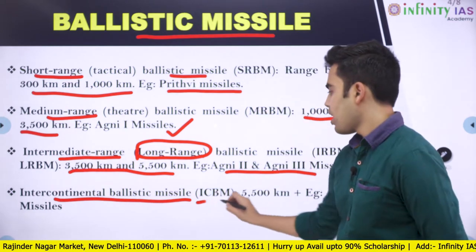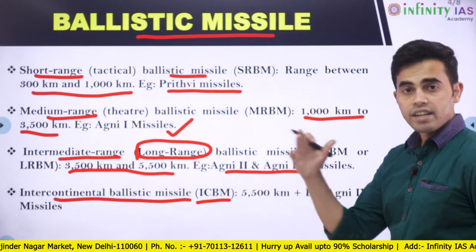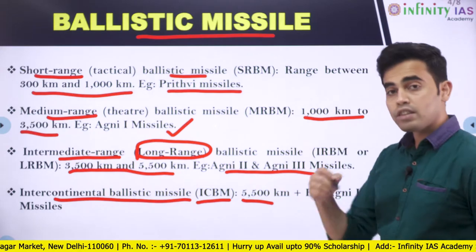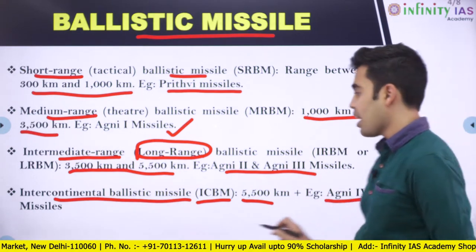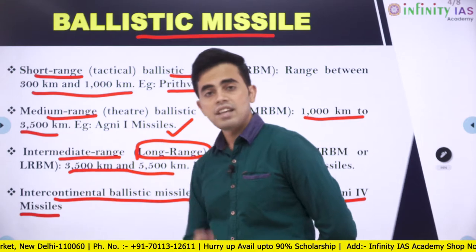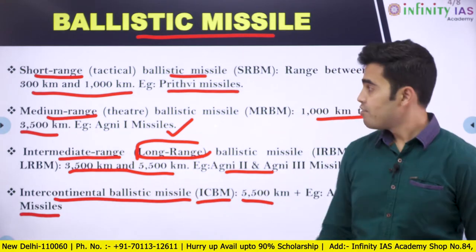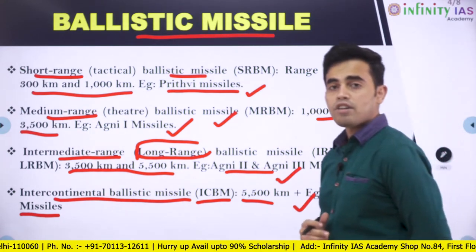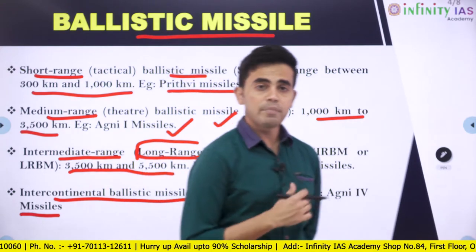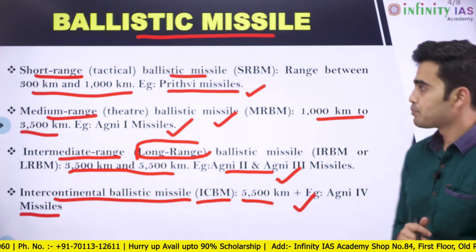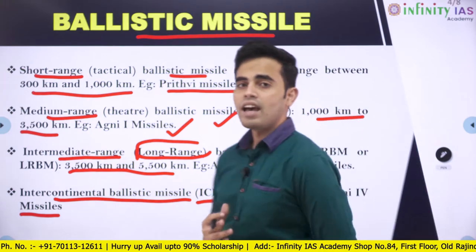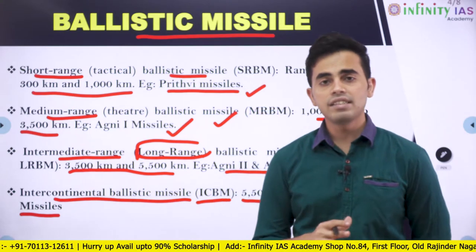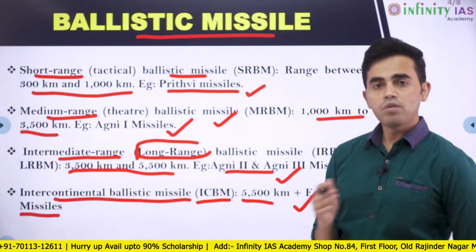Then comes ICBM — Intercontinental Ballistic Missile. This is the highest range, over 5500 km. We have Agni-4 missiles being developed by India in this category. All these four missile systems are developed as part of the Integrated Ballistic Missile Development Program by India. Now that we have seen ballistic missiles, we will see what are cruise missiles and compare both types to understand how they operate.